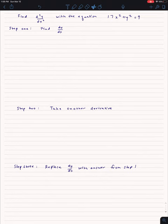For this problem, we're going to use implicit differentiation to find a second derivative of an equation. So here's our equation, 17x squared plus y squared equals 9.